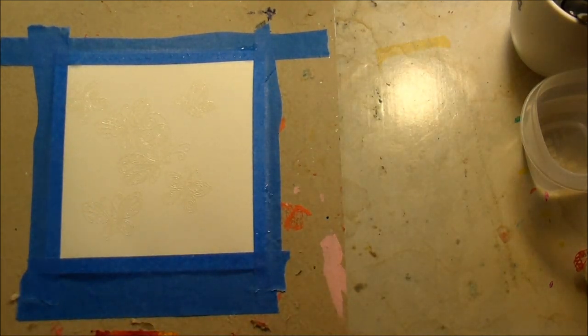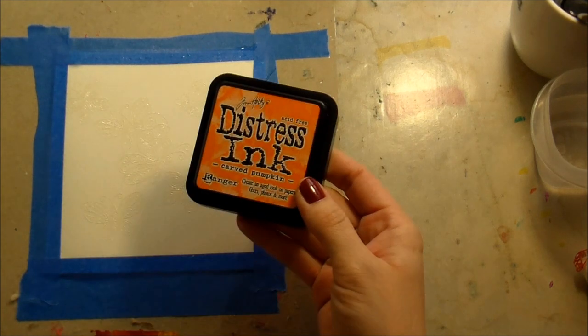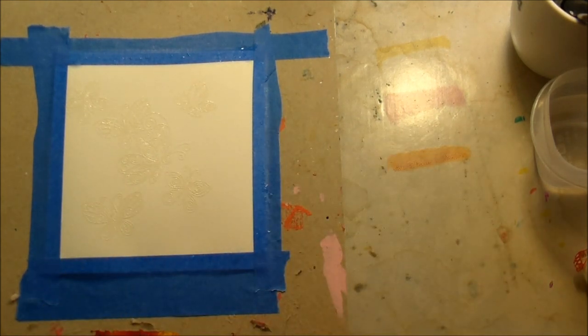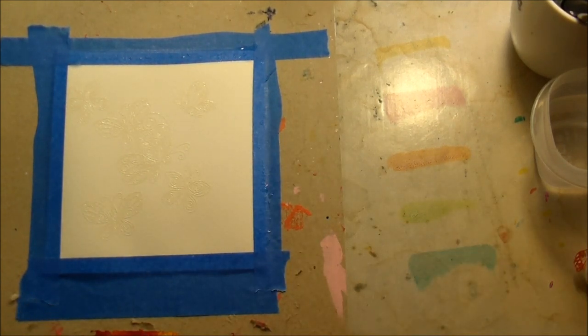I picked out a couple of distress inks that I liked that are brighter colors that I thought would work really well together and I'm just kind of smearing those down on my Ranger craft mat so I can pick up what I need from them. And I used mustard seed, picked raspberry, carved pumpkin, twisted citron, and peacock feathers.